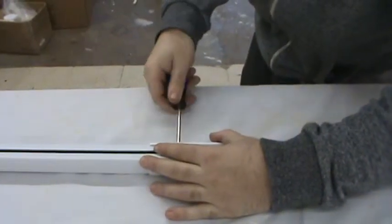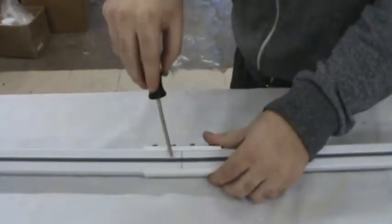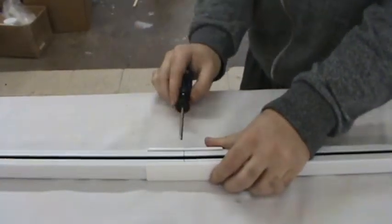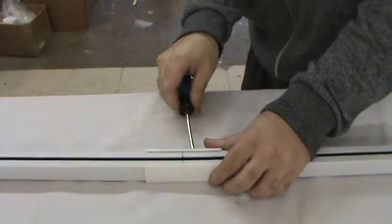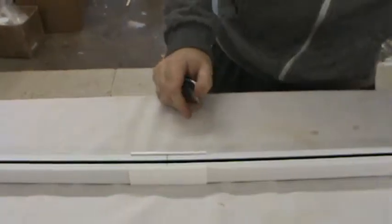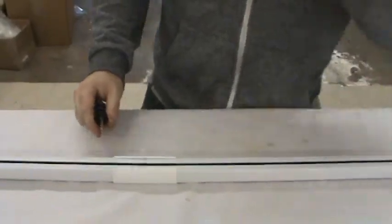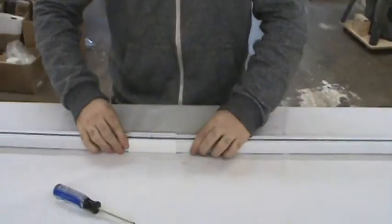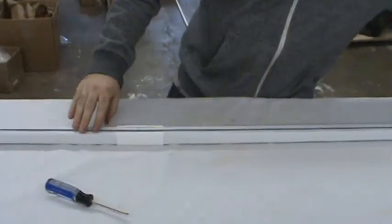And while you're doing this, there's little channels inside this track. And you want to make sure that the channels for each section of the track are lined up perfectly straight together, so that these carriers don't get caught when they're running through the track. So that looks good.